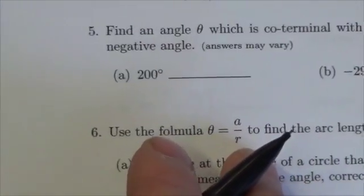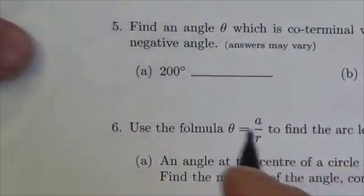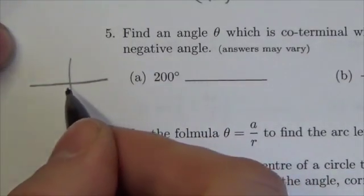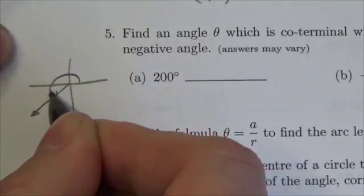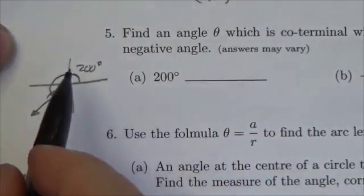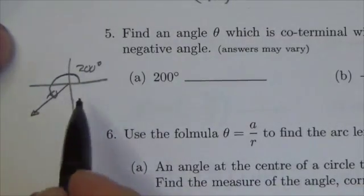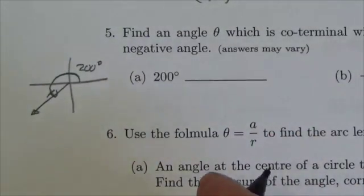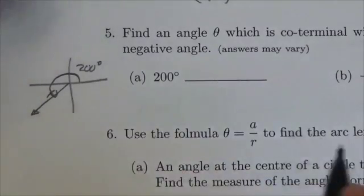Co-terminal means that the angles all share the same terminal arms. So let's just take a quick look at what that might imply here. 200 degrees is going to be just slightly down here in the third quadrant. So this would be 200 degrees. But the thing is, there's no reason to say we can't go around and around and around the circle, forwards and backwards, however many times we want here. Any angle that ends along this line is going to be co-terminal to it.